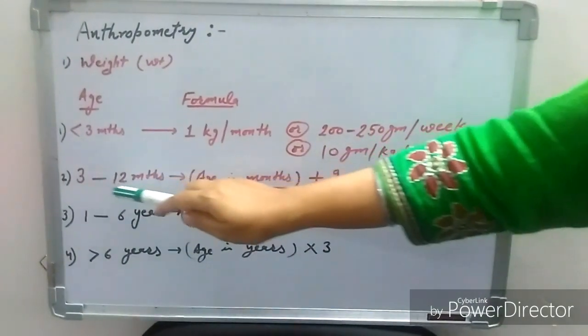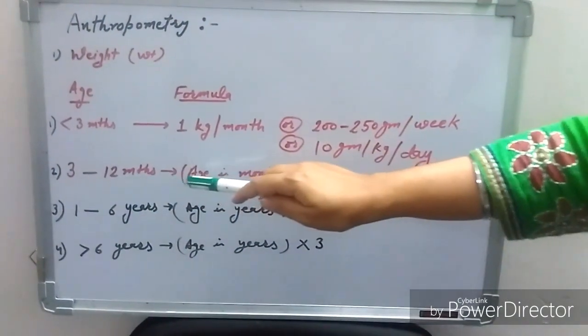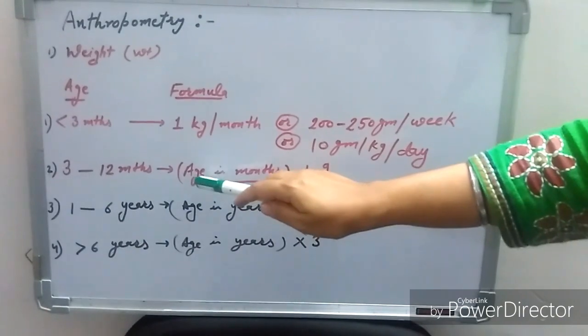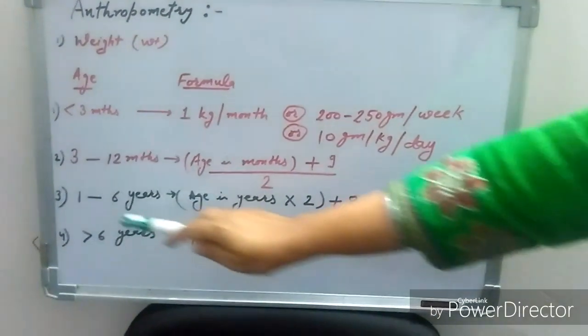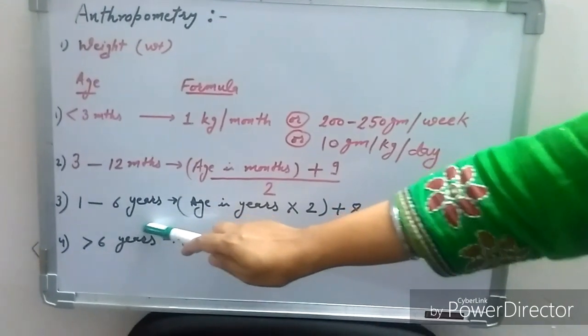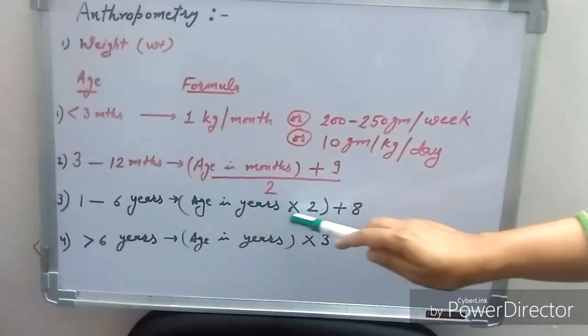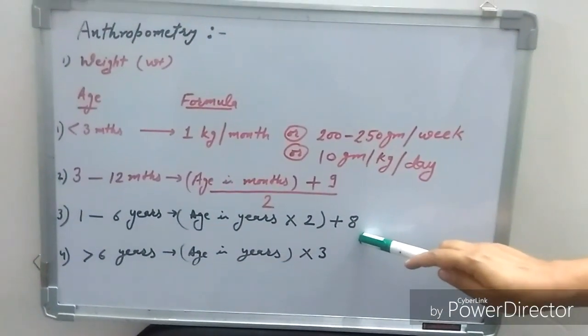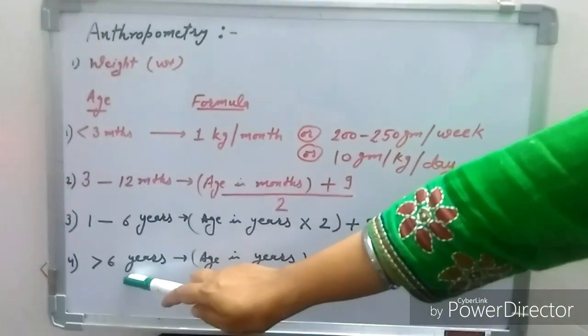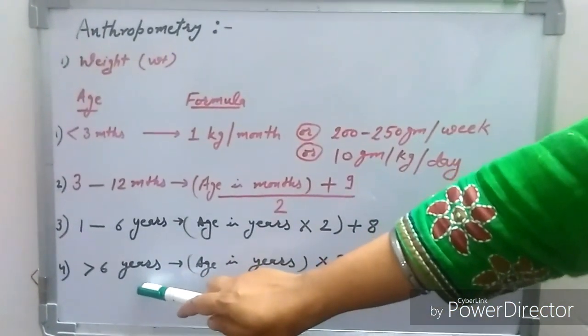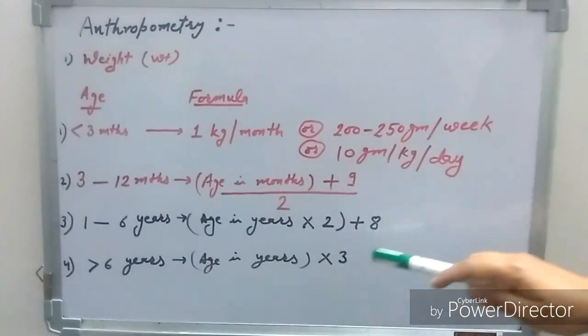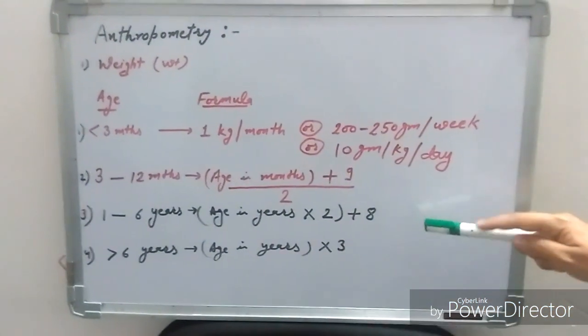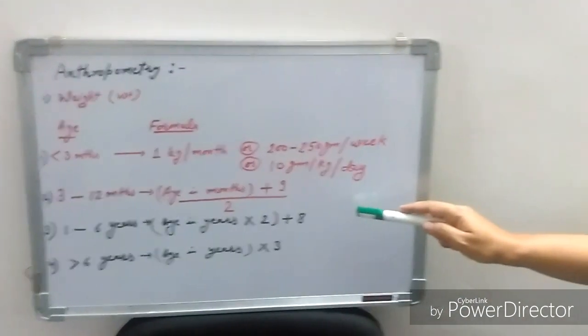Between 3 to 12 months age, expected weight can be calculated by age in months plus 9 divided by 2. Between 1 to 6 year age group, age in years times 2 plus 8, and if age is more than 6 years between 6 to 12 year age group, age in years multiplied by 3. So these are the various formulas to calculate the expected weight.